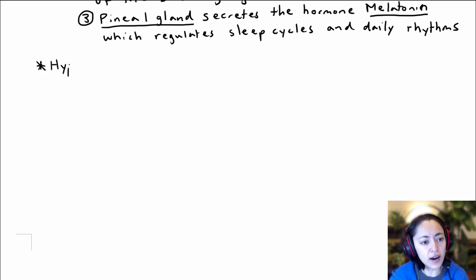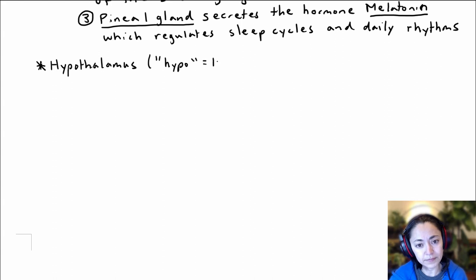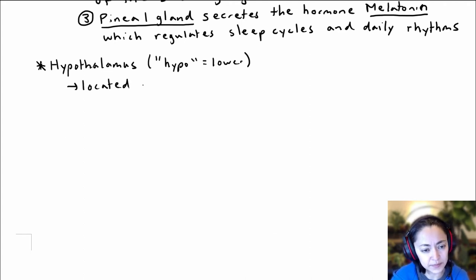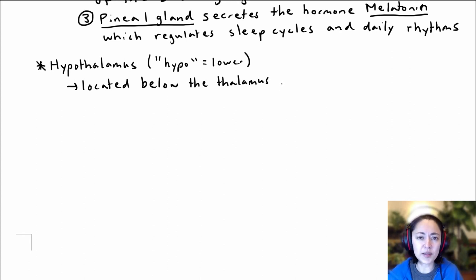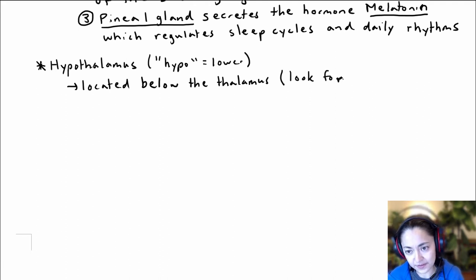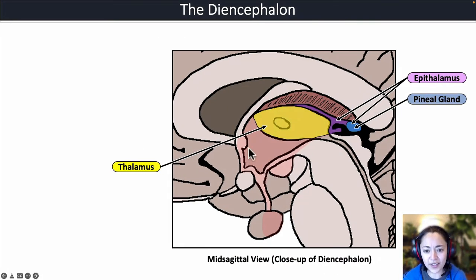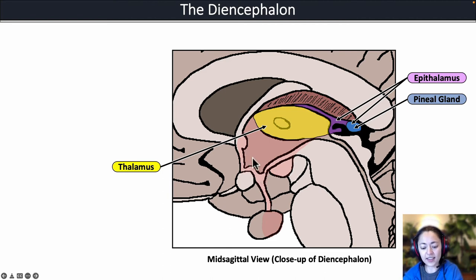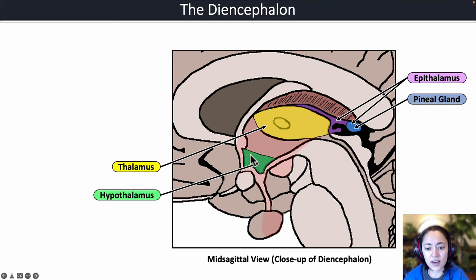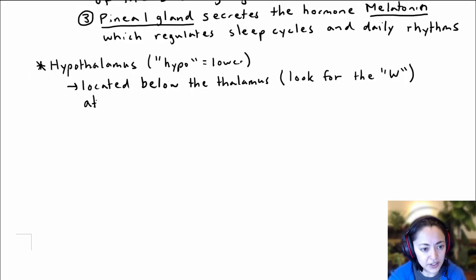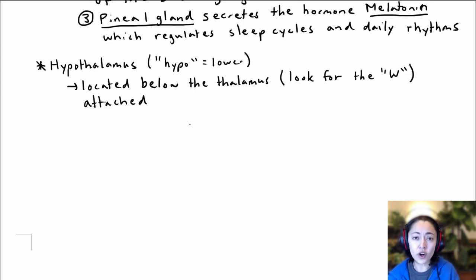The next major structure in the diencephalon is called the hypothalamus. 'Hypo' means lower or below, so the hypothalamus is located below the thalamus. I usually locate the hypothalamus by looking for a W shape at the lower portion of the diencephalon in the midsagittal view — that is where the hypothalamus is located, shown in green here. The hypothalamus is attached to the posterior pituitary gland by a stalk called the infundibulum.